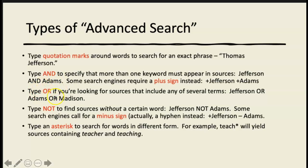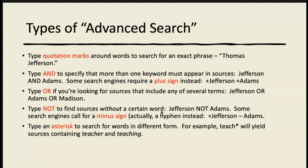Use OR instead of AND if you're looking for sources that include any of several terms — for example, 'Jefferson OR Adams OR Madison' searches for sources containing any of those three names. Use NOT to exclude a certain word. For example, if you're searching for information on Jefferson but keep getting results about Adams that aren't relevant to your focus, you can type 'Jefferson NOT Adams' to filter those out.